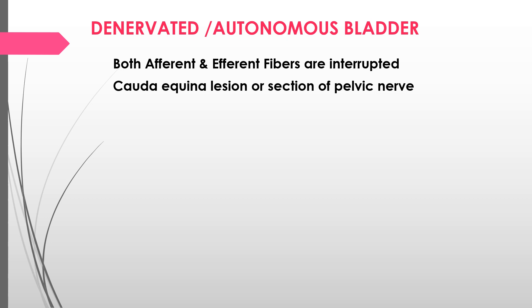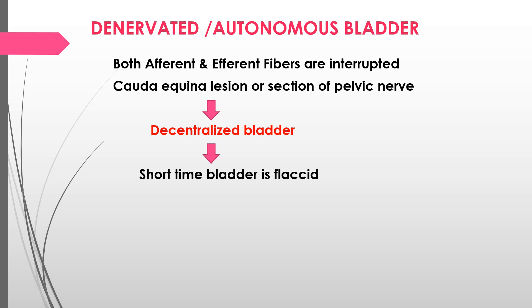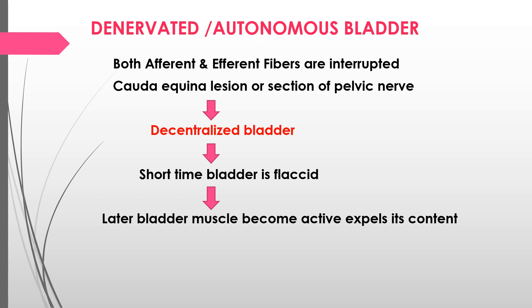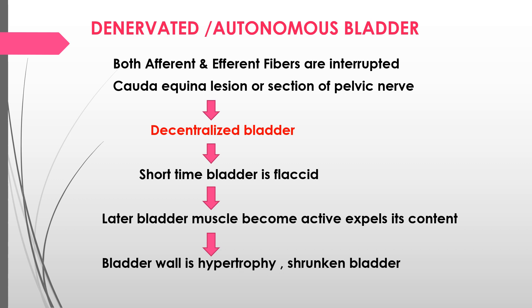The autonomous (denervated) bladder occurs when both afferent and efferent fibers are interrupted, such as in cauda equina lesion or section of the pelvic nerve. This is called a decentralized bladder. Initially the bladder is flaccid, but later it becomes active and starts expelling contents. The bladder wall becomes hypertrophied and the bladder shrunken.